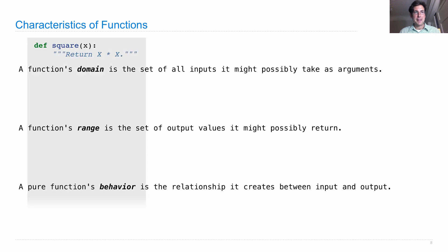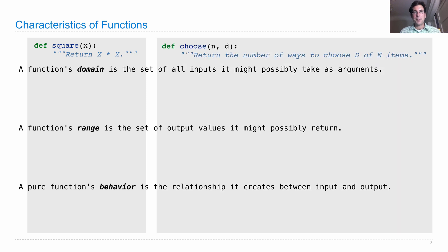Let's look at a couple of examples. We've defined a square function before, which returns x times x, given an argument x. We also recently looked at the choose function, which returns the number of ways to choose d out of n items. If you're given either of these and asked to implement it, you should think about the domain, the range, and its behavior.